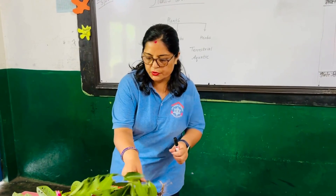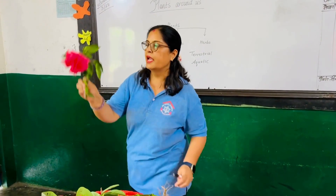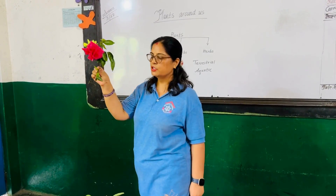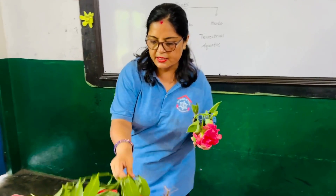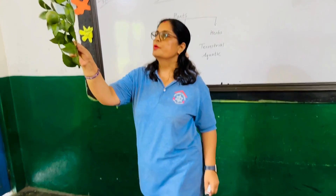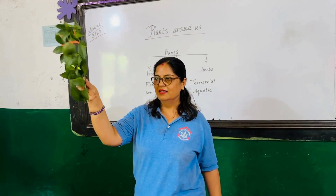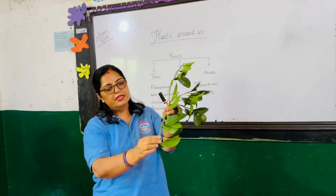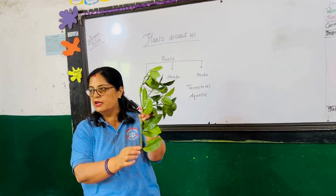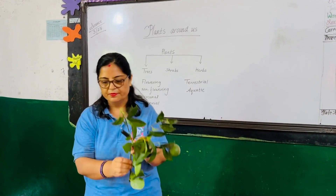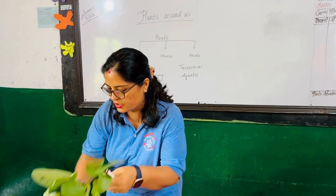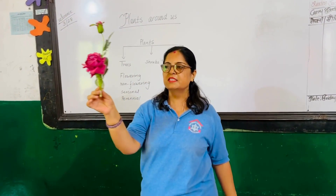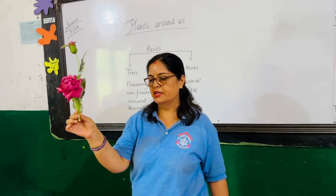Now I am going to show you some shrub plants. Can you guess which plant is this? Hibiscus plant. Yes, hibiscus plant. Likewise, which plant is this? Lemon plant. It is a lemon plant — its stem is very hard and woody. And another bushy plant — which plant is this? Rose plant. Very good.